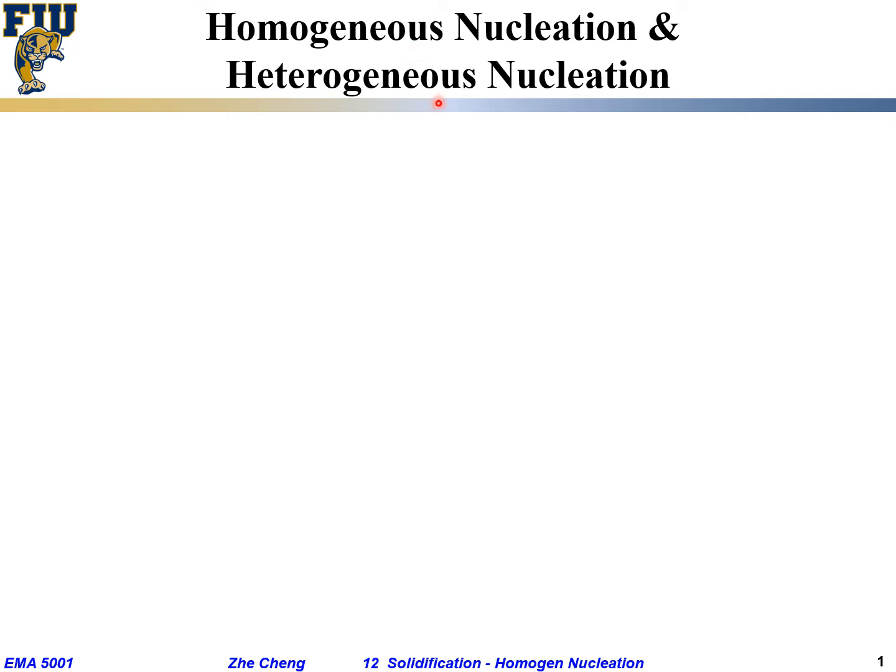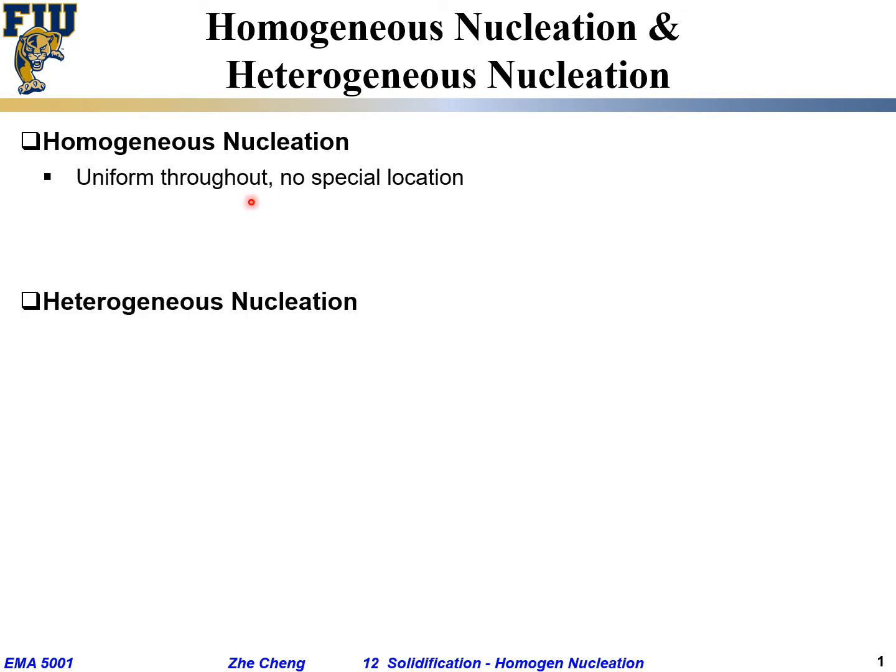Homogeneous nucleation, as the name suggests, is uniform throughout the material. Any place has equal probability. That is not happening at a special location.